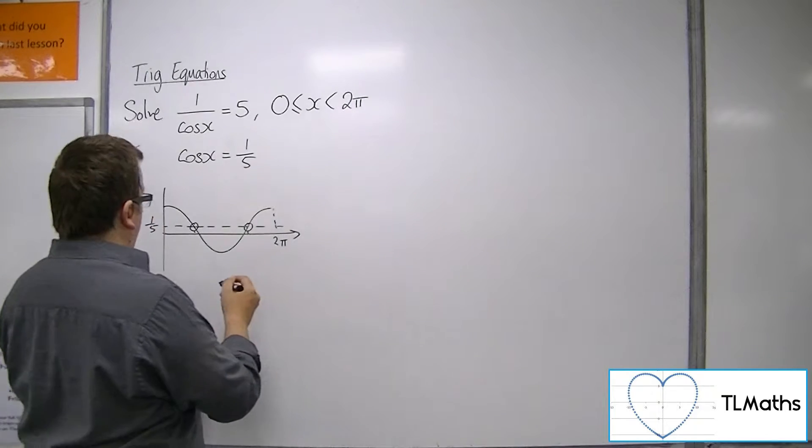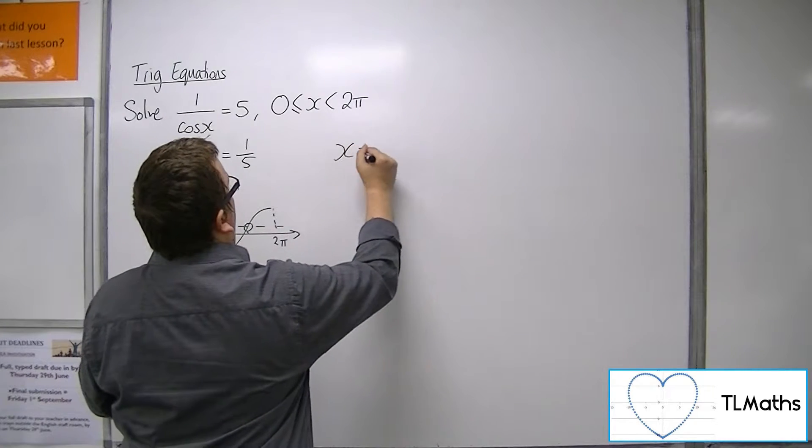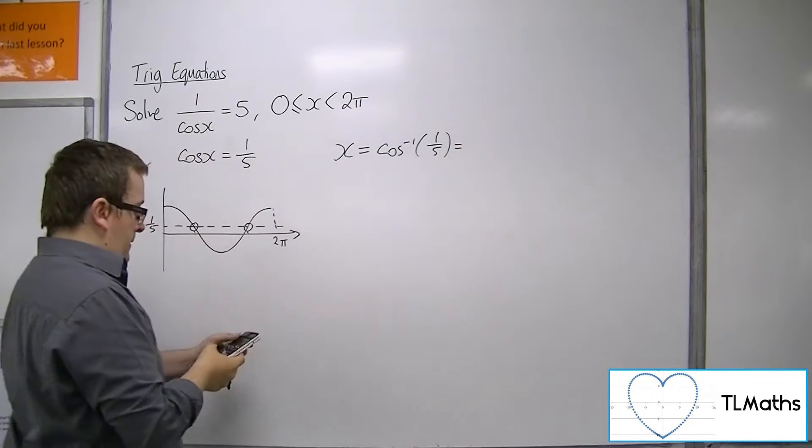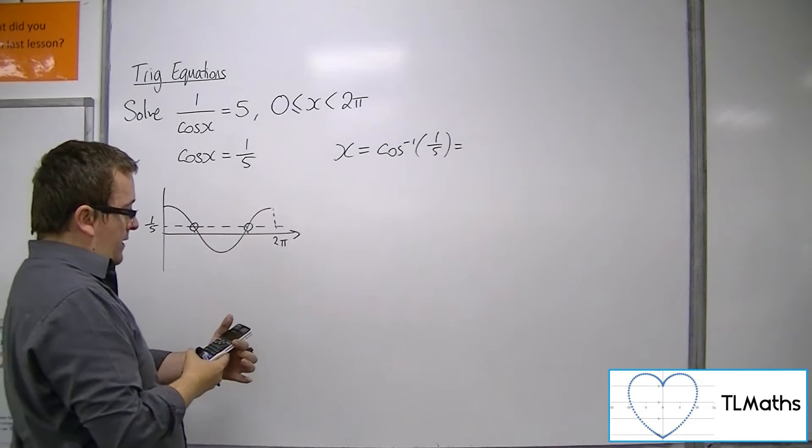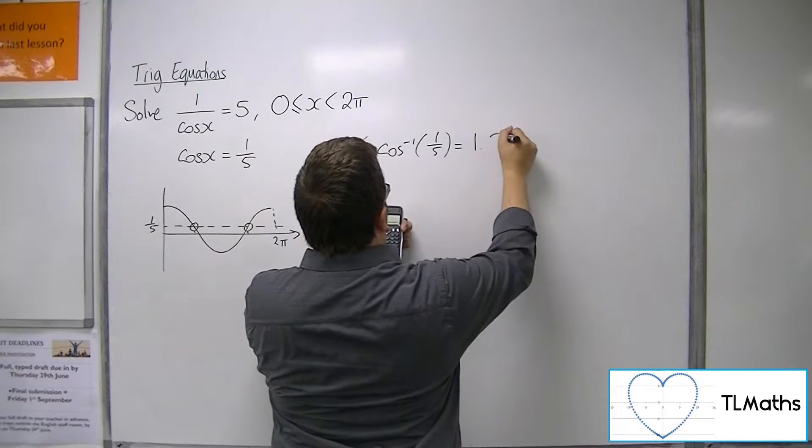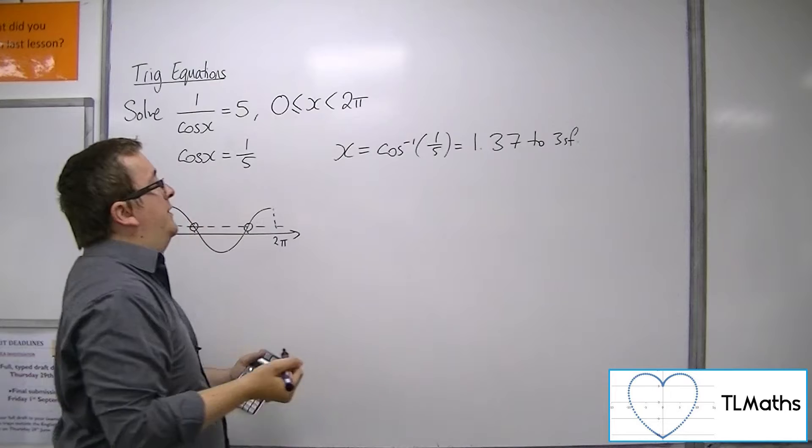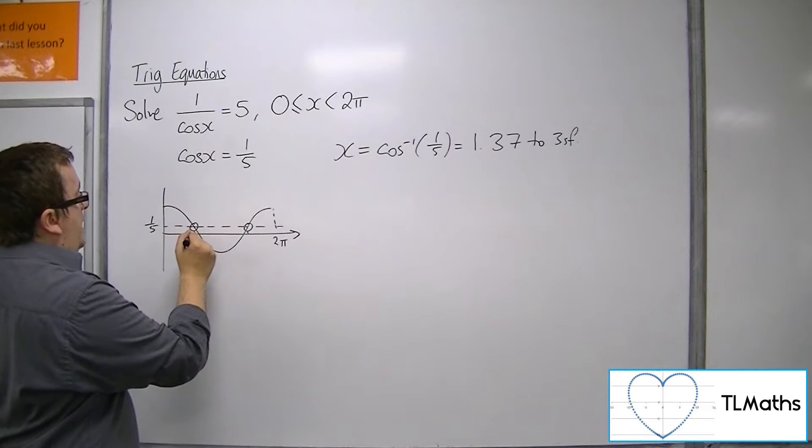First solution, x is the inverse cosine of 1 fifth. Inverse cos of 1 fifth is 1.37 radians to 3 significant figures. That is this result here.